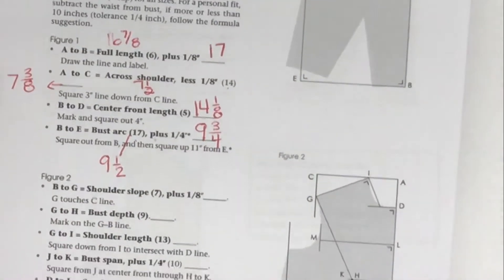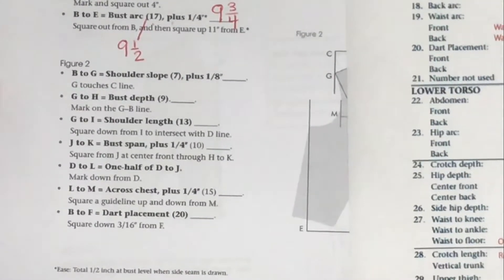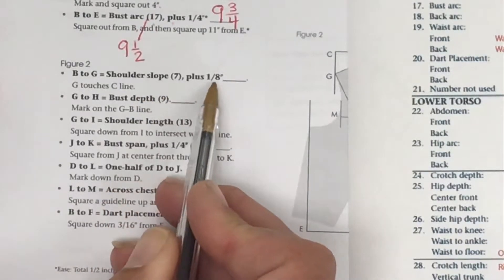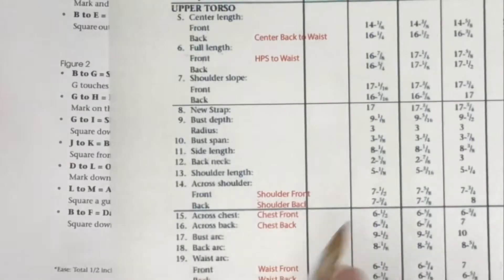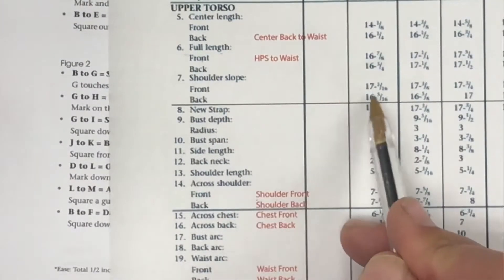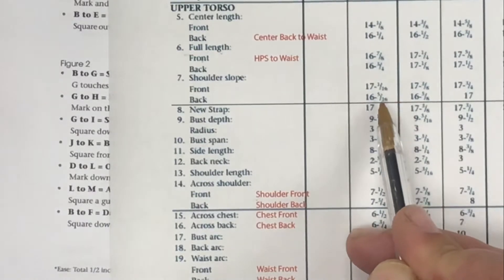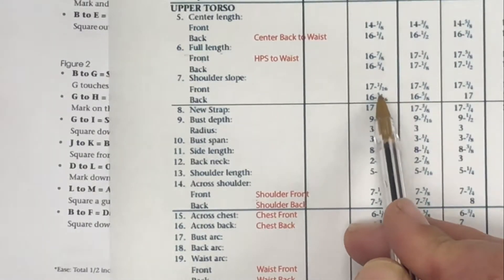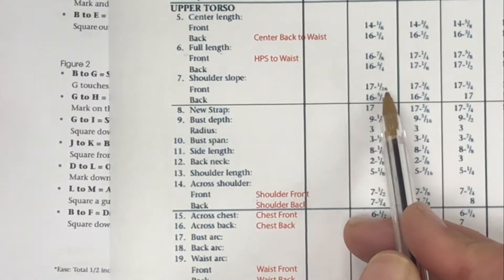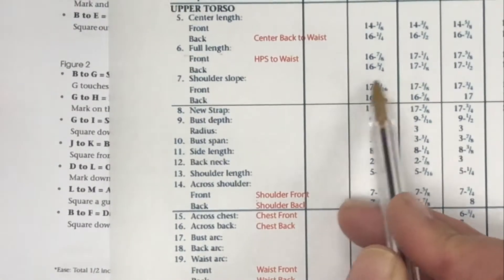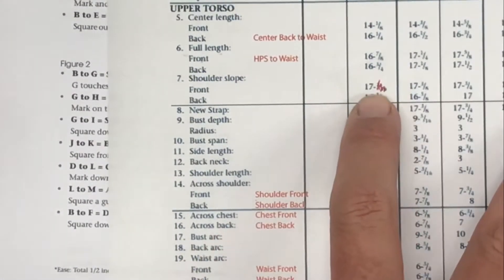I'm going to keep going. Our shoulder slope, we have to add 1/8 inch. Number 7. Our shoulder slope, we have a front and back choice, I'm going to choose the front. 17 and 1/16. I'm only going to work in eighths, I'm breaking the rules, so I'm rounding this to the nearest eighth. It's going to be 17. Our front shoulder slope for size 6 is 17. 17 plus 1/8 would be 17 and 1/8.